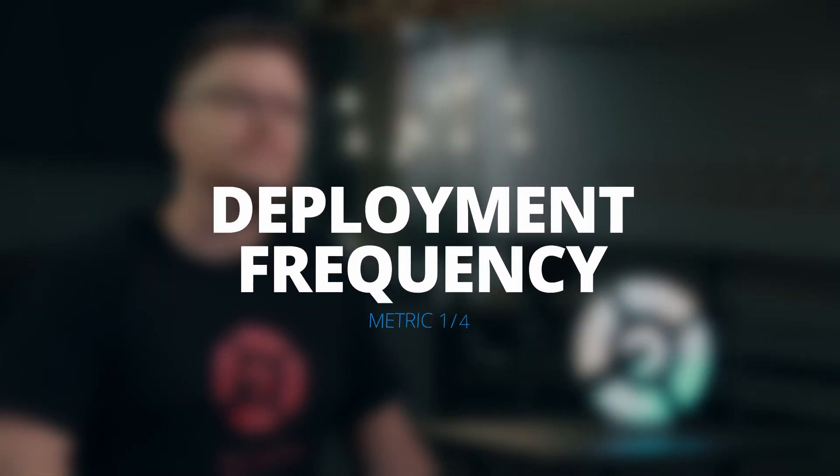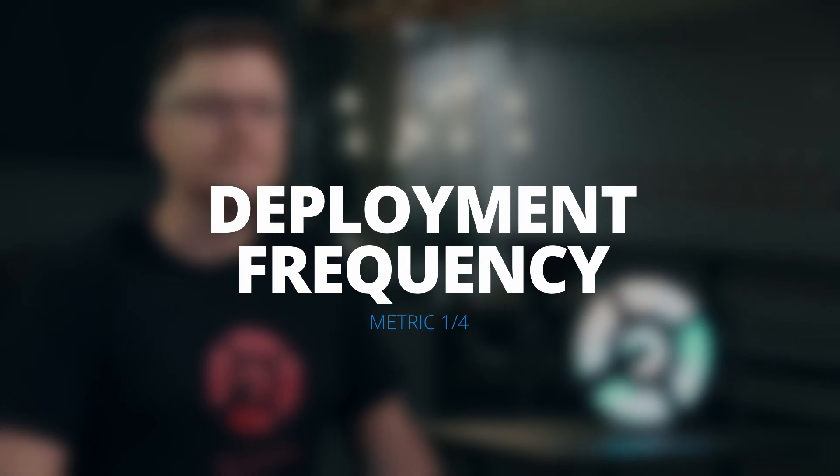A common misconception of deploy frequency is that by shipping code to production more often, you're actually creating more risk. Deployment frequency is very important — in fact, it's usually the first place a team starts. What you're doing is measuring how many times you change production, and the goal of delivering code quickly to production is to ship as many times as possible.